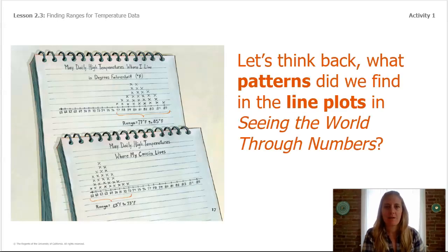Maybe you remember back in our book about finding the range for each line plot. I remember the May temperatures where the boy lives were similar and the May temperatures where his cousin lived were similar. Both places, though, had different ranges, so the weather was not the same.